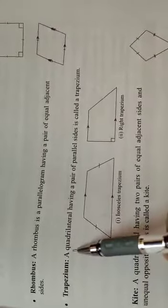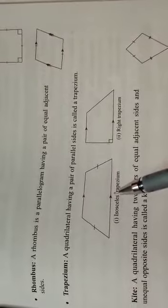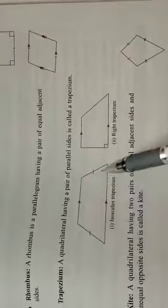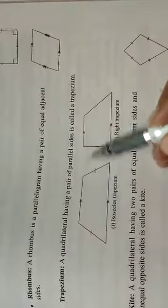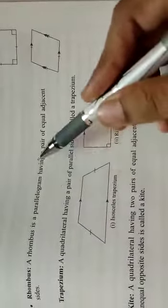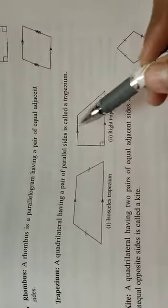Now coming to the second one, trapezium. A quadrilateral having a pair of parallel sides is called a trapezium. It is a quadrilateral in which you will have exactly one pair of parallel sides and one pair of non-parallel sides. If we extend the parallel sides, they will never intersect, but if we extend the non-parallel sides, they will intersect at some point.